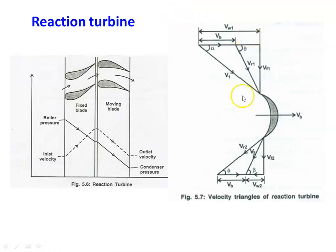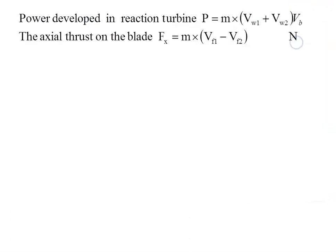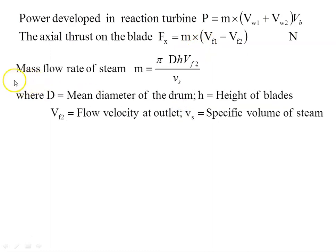The velocity triangle is very similar to the impulse turbine but the conditions are different. Power produced is P = m(Vw1 + Vw2) × Vb. Axial thrust Fx = m(Vf1 − Vf2). Mass flow rate m = πdh × Vf / Vs, where d is the mean diameter of the rotor drum, h is the blade height, Vf is the flow velocity, and Vs is the specific volume of steam at the given pressure and temperature.